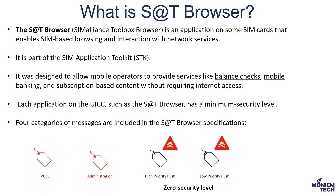What is Simjacker? Each SIM card has something called the SIM toolkit, and this toolkit has different applications. One of them is called S&T browser, used for purposes like balance checks and mobile banking. There are certain minimum security levels, but for messages like high priority push and low priority push, there is a zero security level. For that reason, the attacker can send any push message without any check from the S&T browser specification and carry out an attack.